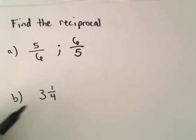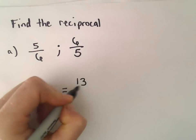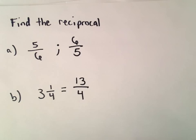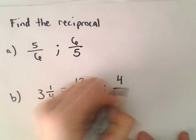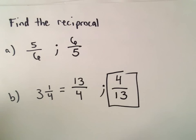But to find the reciprocal of 3 and 1 fourth, we're first going to have to make this into just a single fraction, no mixed number. So 4 times 3 is 12, plus 1 will be 13. We'll leave the denominator alone, so that's just rewriting. But then if we take the reciprocal, now we'll just flip the fraction over. So 4 over 13 would be the reciprocal of the number 3 and 1 fourth.